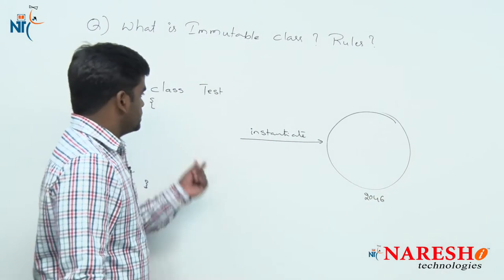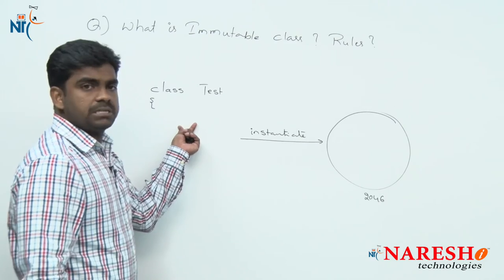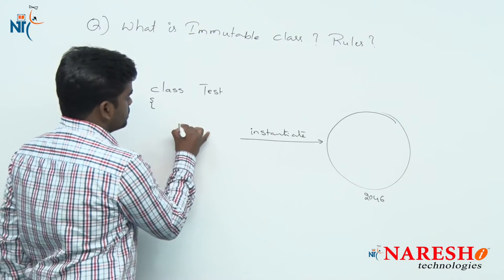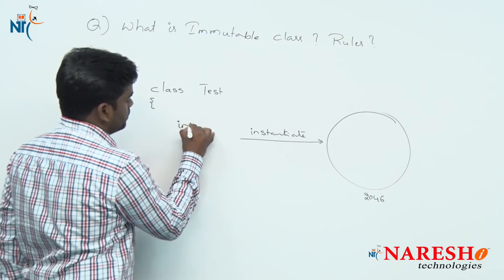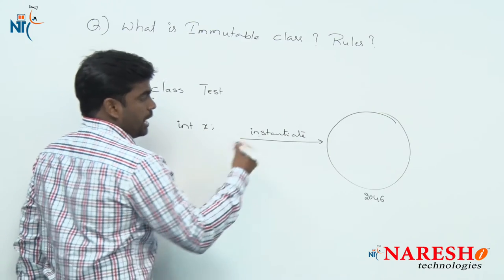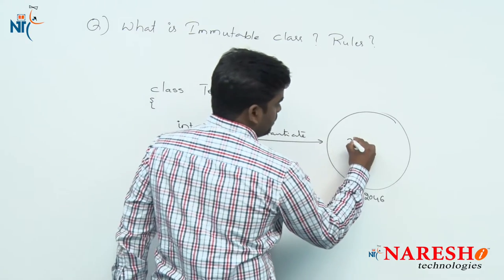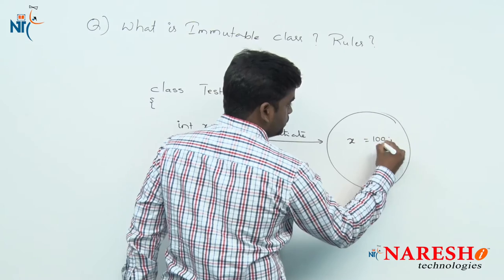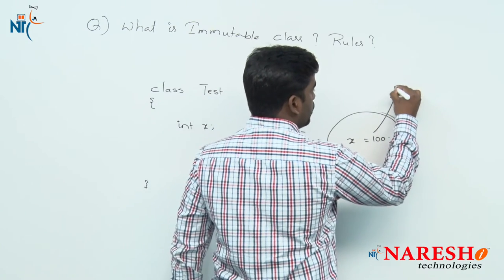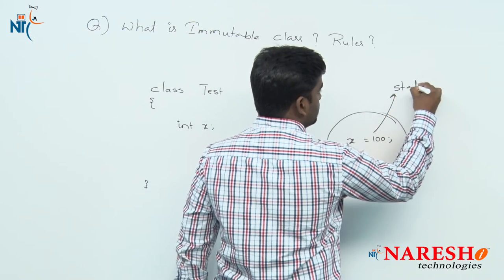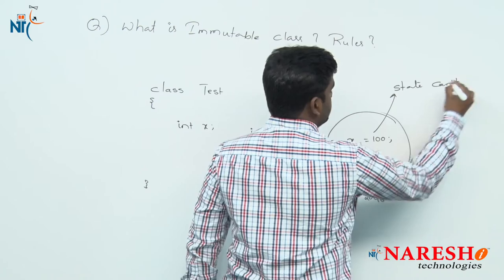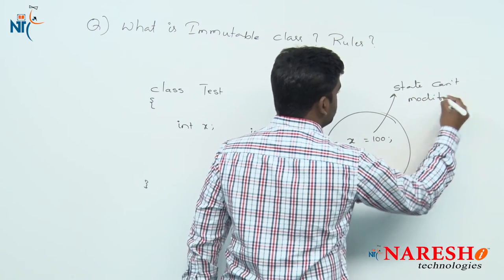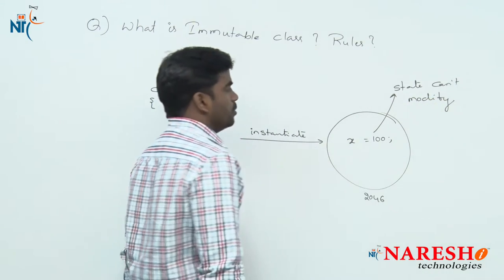What is the state? Properties — the variables. Just create one variable like x and if you provide some value, once you assign any value the state you cannot modify. That is what we call an immutable object.